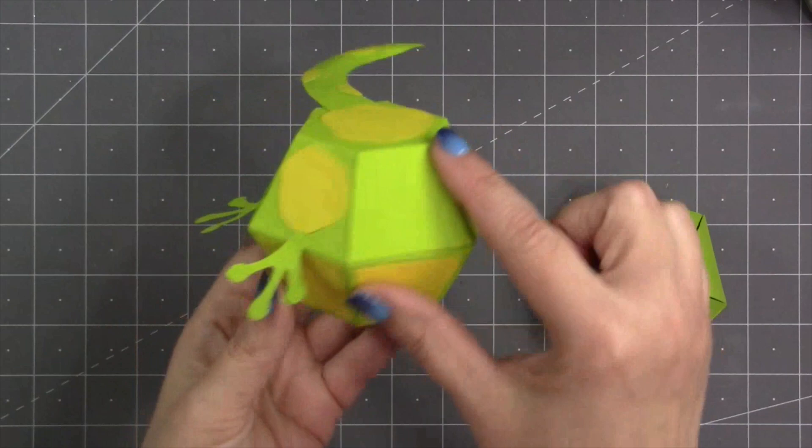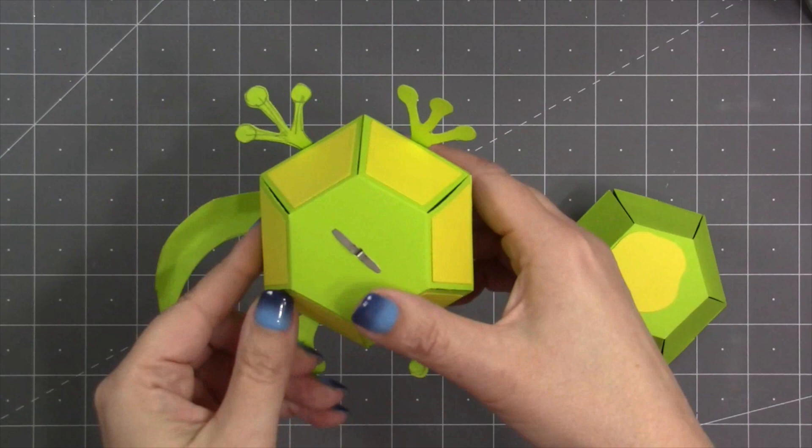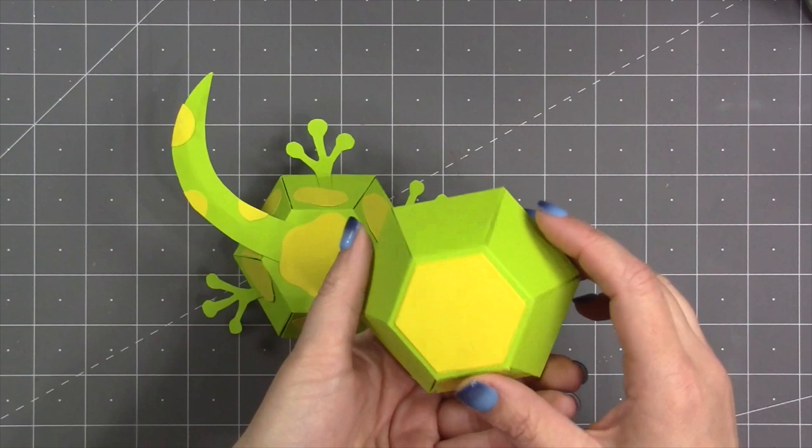For the bottom half of the surprise ball that pretty much was representing his belly, I decided that should just be yellow all the way around, and I just used the decorator pieces that come in the set.